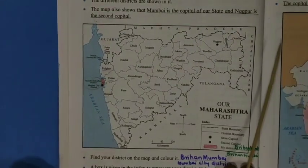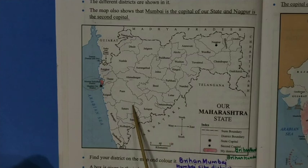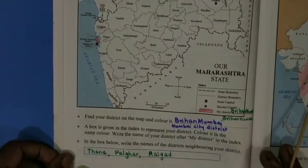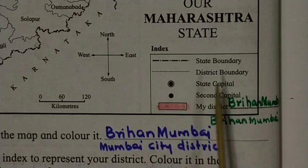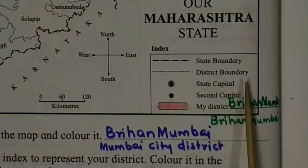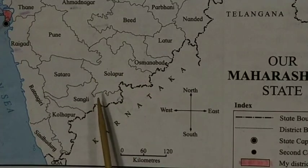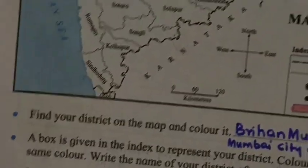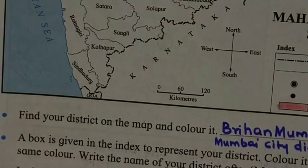Now let us see the Maharashtra map. Maharashtra is a state, and in a state there are many districts. First we'll see the index. State boundaries are shown with a dark bold line, district boundaries are shown with a dotted line, the state capital is marked with one symbol, and the second capital with another symbol.